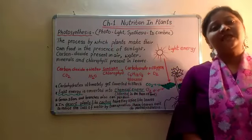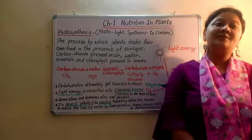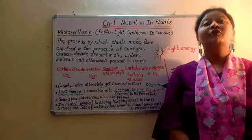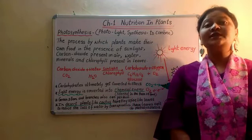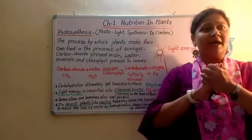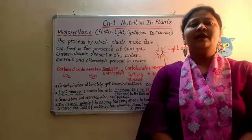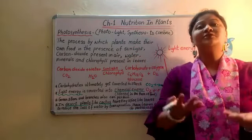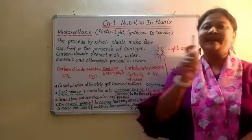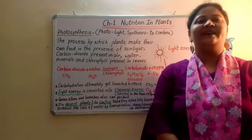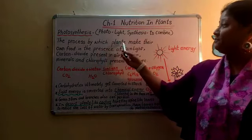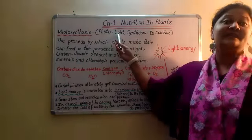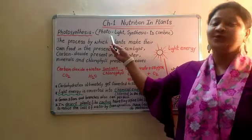Photosynthesis. First I will read the definition and then I will be explaining the meaning and the process of photosynthesis. Photosynthesis comes from the word 'photo' which means light, and 'synthesis' means to combine. So this must be some process where something is combining with something to form something in the presence of light — and yes, you are absolutely correct. Photosynthesis is the process by which plants make their own food in the presence of sunlight.